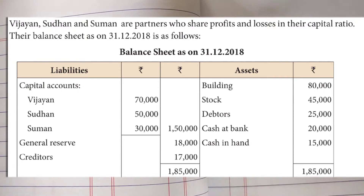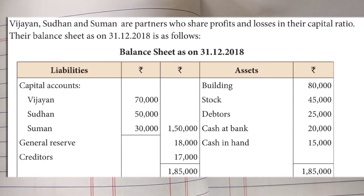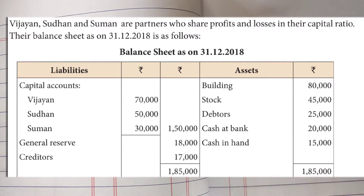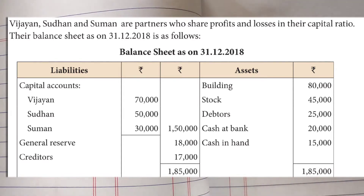Whenever we have a balance sheet, we have to see what accumulated profits, reserves and losses are given. On the liability side of the balance sheet we have a general reserve of 18,000 which has to be divided in the capital ratio. Since it is on the liability side, it goes to the credit side of the capital account when we open it.